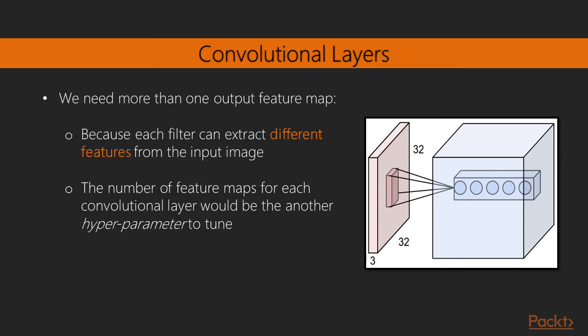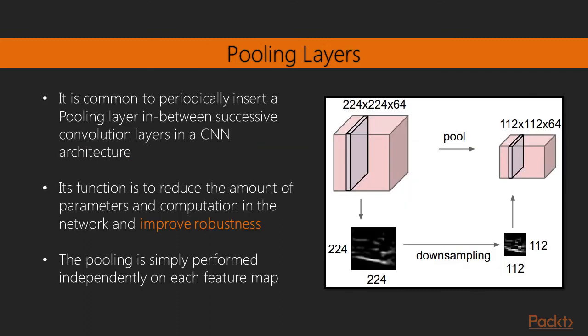But why do we need more than one output feature map then? Because each filter can extract different features from the input image. One for example can extract horizontal edges, another vertical edges and so on and so forth. However the number of feature maps for each convolutional layer would be another hyperparameter to tune.